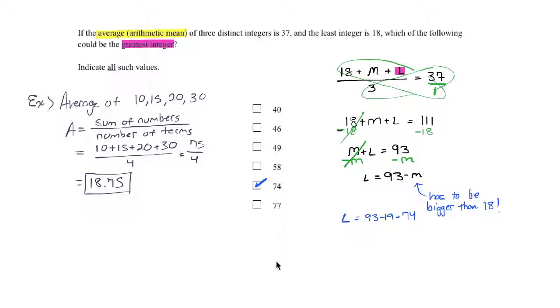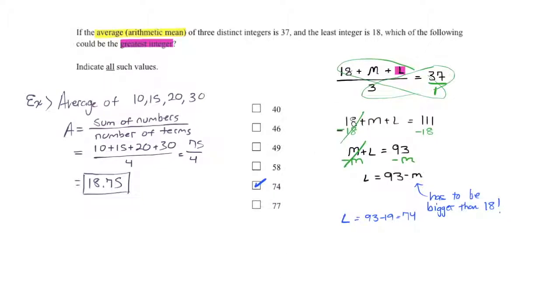Therefore, we can't get anything bigger than 74. The situation is starting to take shape. It should be clear that there are other options, because there are numbers besides 19 that we can use for the middle number.